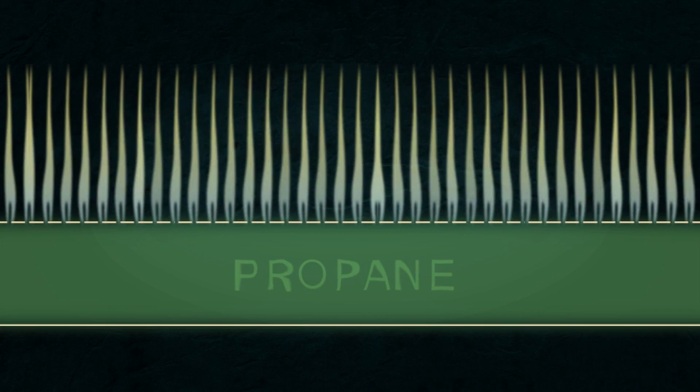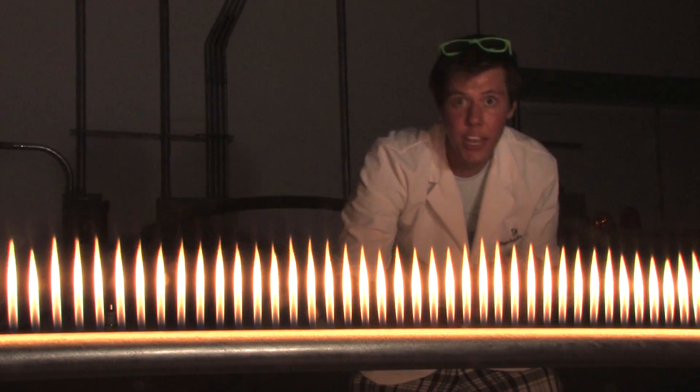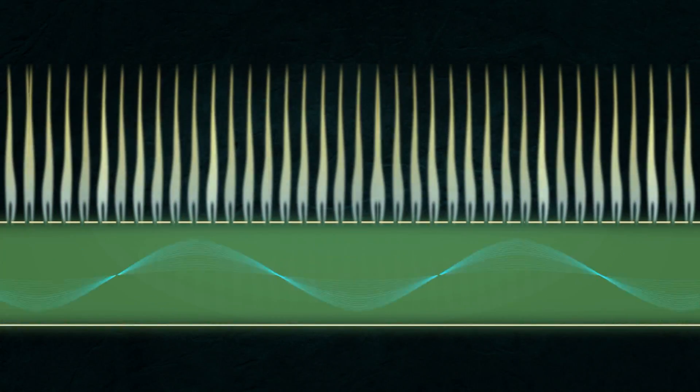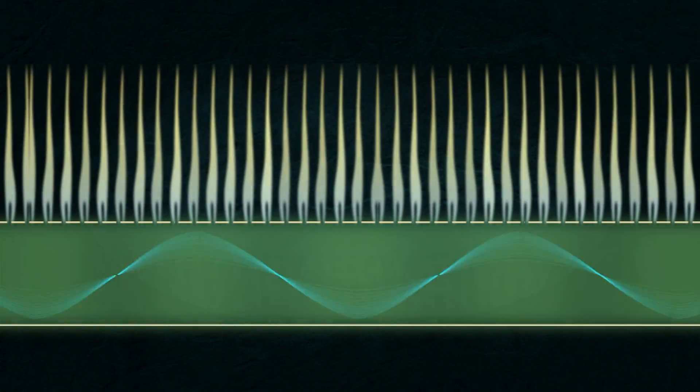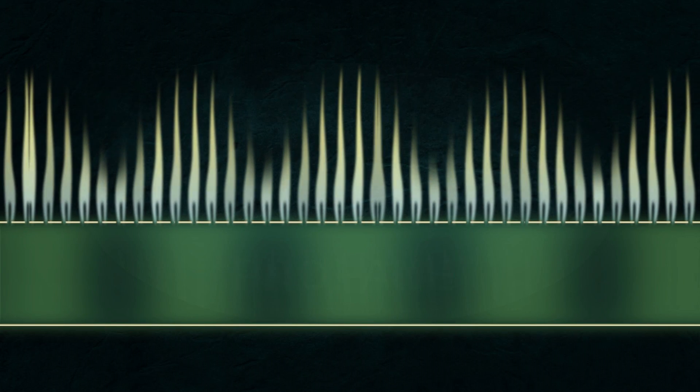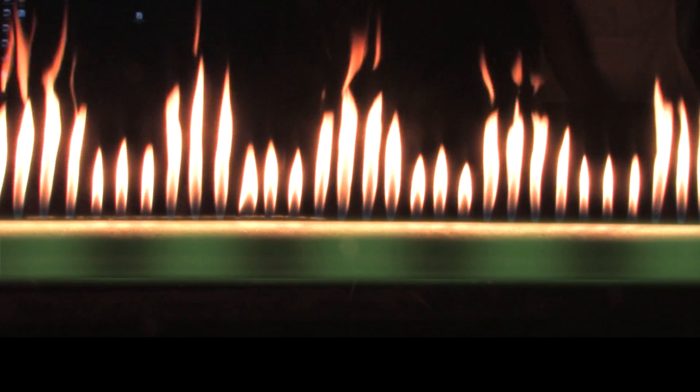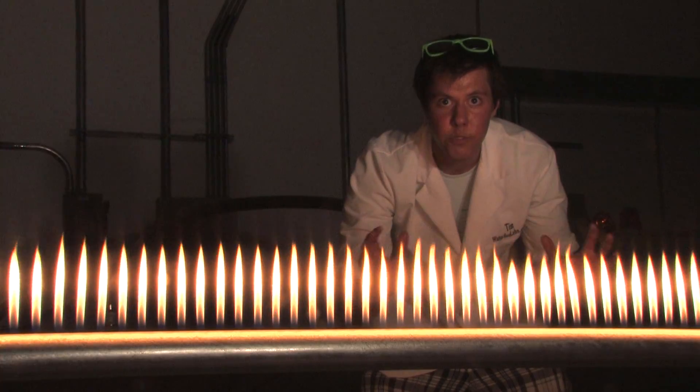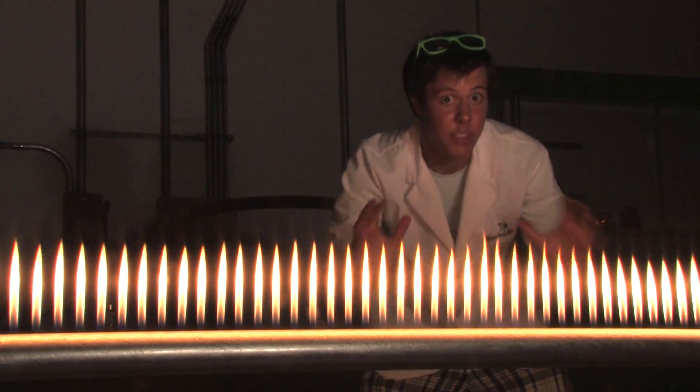When a constant frequency is played out of the speaker and into the pipe, the sound waves create a standing wave all along the length of the tube. The resonance of this standing wave creates a pressure gradient along the pipe. Areas of high pressure push out more gas through the holes in the top, while areas of low pressure push out less. By igniting these expelled flames, we obtain our desired visualization of the sound wave in the fire.